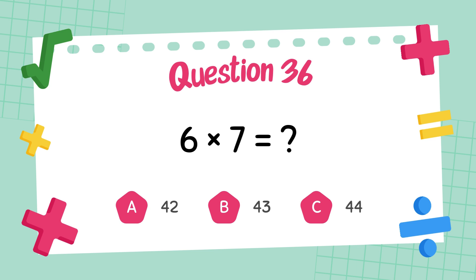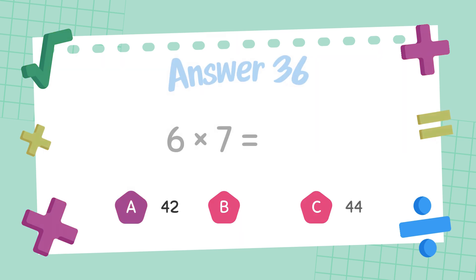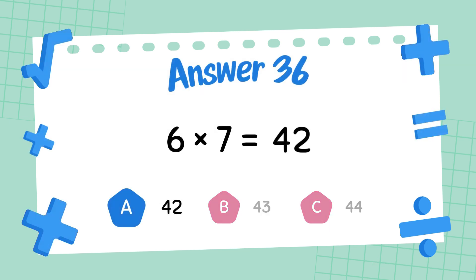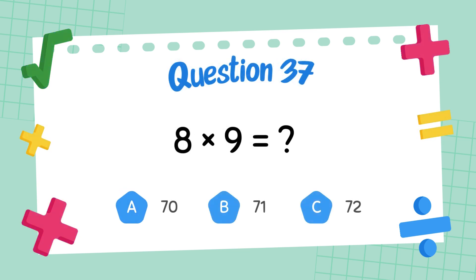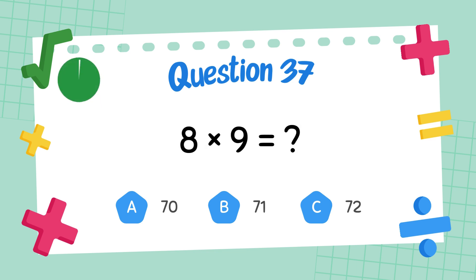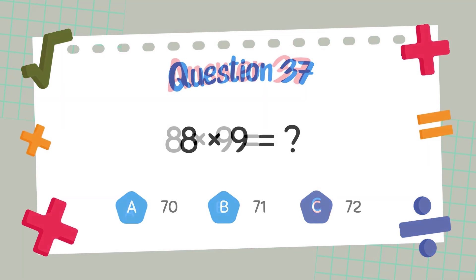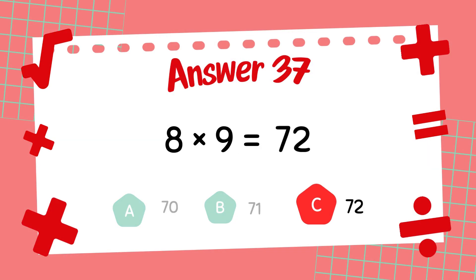What is 6 times 7? The answer is 42. What is 8 times 9? The answer is 72.